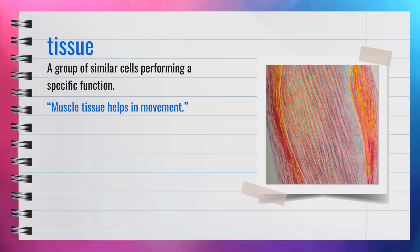The word tissue, spelled T-I-S-S-U-E, is a noun. Tissue refers to a group of similar cells performing a specific function. For example, muscle tissue helps in movement. In summary, tissue means a group of similar cells.